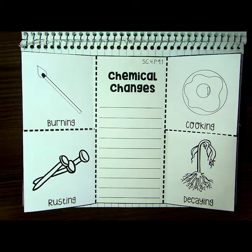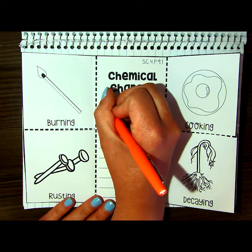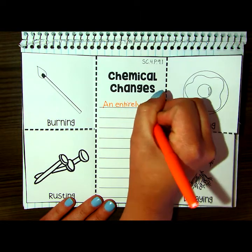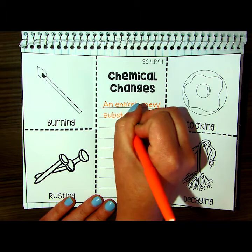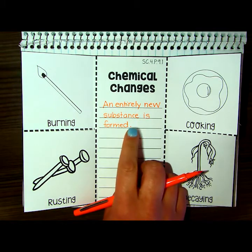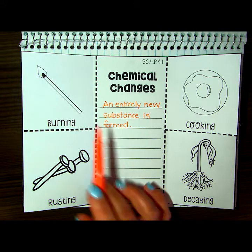In fourth grade, we do a good job explaining the difference between a chemical and a physical change. We understand that a physical change means a new substance is not formed, and in a chemical change, a new substance is formed. Let's start with chemical changes and identify what we already know. An entirely new substance is formed. We may know that these four are definite examples: burning, cooking, decaying, and rusting.